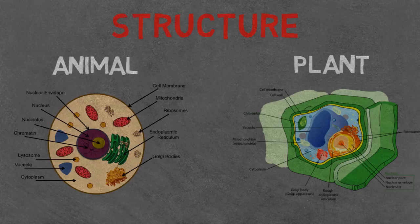Ribosomes, which assist in the process of protein synthesis. Mitochondria, which is the powerhouse of the cell. And lastly, a cell membrane, which controls what comes in and out of the cell.